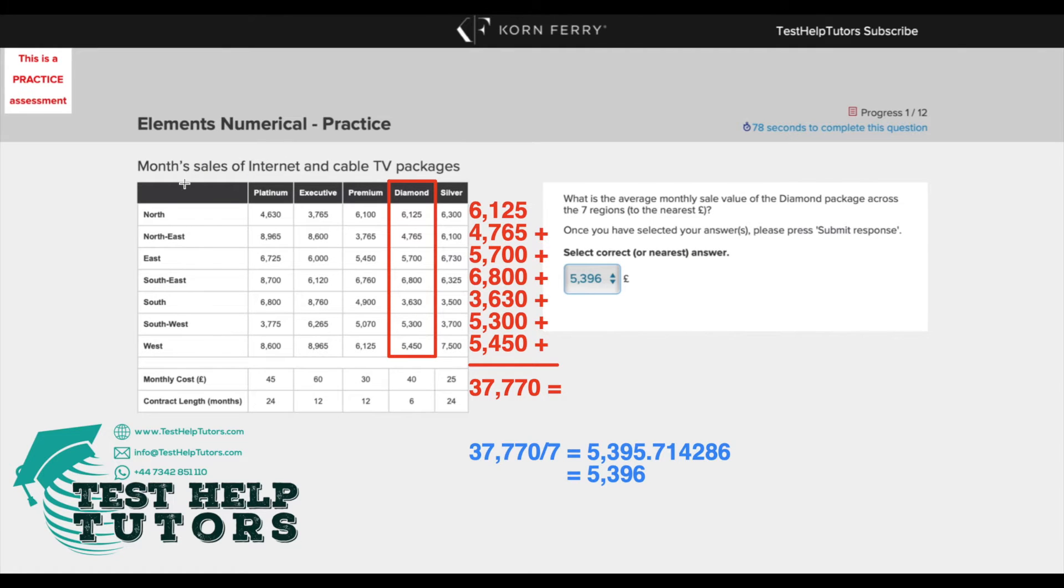Here we have a table titled Month Sales of Internet and Cable TV Packages. We can see that these are the different packages here and these are the different areas, the seven different areas.